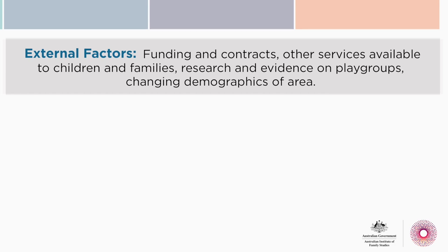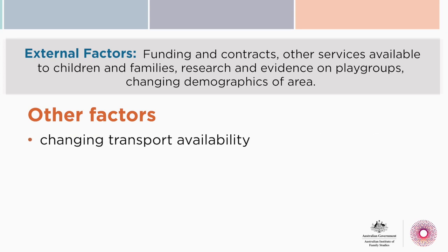In rural and remote services, the changing availability of transport is a big factor — an airline stopping or starting flights to a region, for example. Media storms around particular issues can also really influence the context in which we're working. Community members and staff who are well-grounded in their communities are excellent sources of expertise about local contexts. Identifying external factors not only helps us understand changes we might be seeing, but also enables us to put risk mitigation strategies in place. Pause here if you'd like to add your own assumptions and external factors.